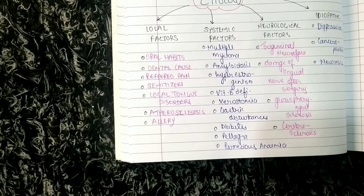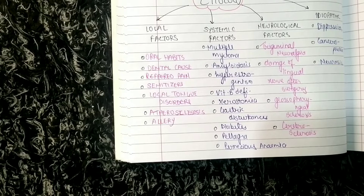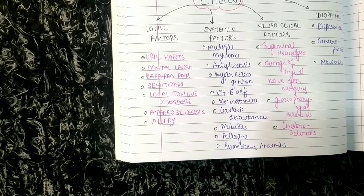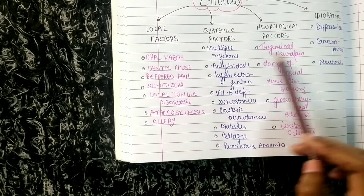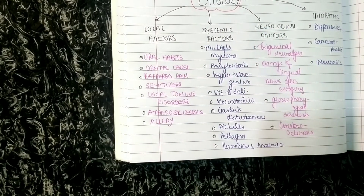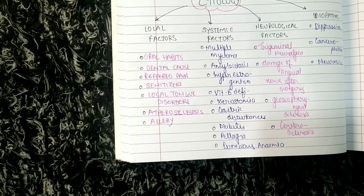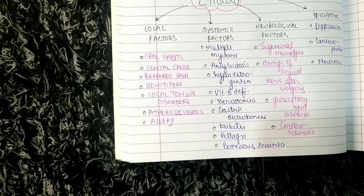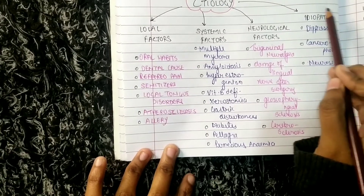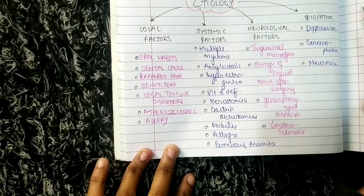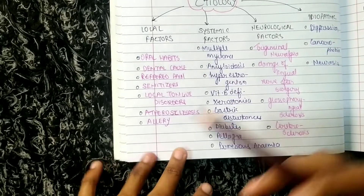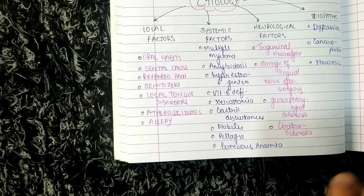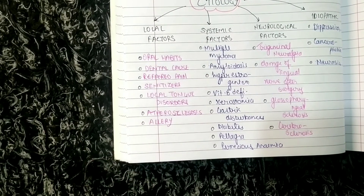For neurological factors, these include trigeminal neuralgia, damage of the lingual nerve after surgery, glossopharyngeal sclerosis, or cerebral sclerosis. If none of these factors are present, then the etiology is considered idiopathic — which can be associated with depression, cancerophobia, or neurosis.